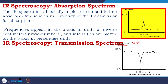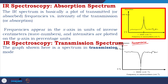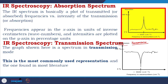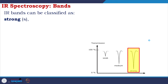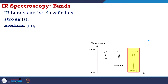The graph is commonly shown in transmission mode — this is the most commonly used representation found in the literature. IR bands can be classified as strong, medium, or weak depending on their relative intensities in the infrared spectrum.